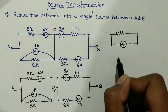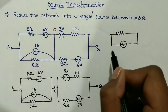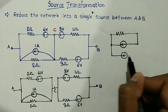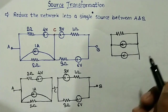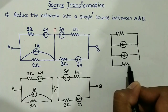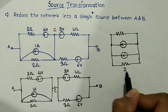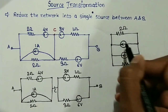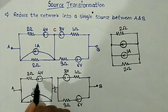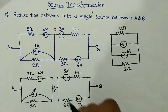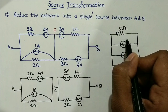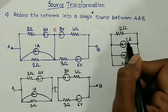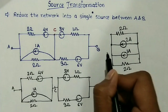Similarly, here we already have a 1 ampere current source with a parallel 2 ohm resistance. This resistance will be 2 ohm. The value of current will be equal to 4 volts divided by 2 ohm, which equals 2 ampere. So, the direction of current is as shown and it is a 2 ampere current supply.